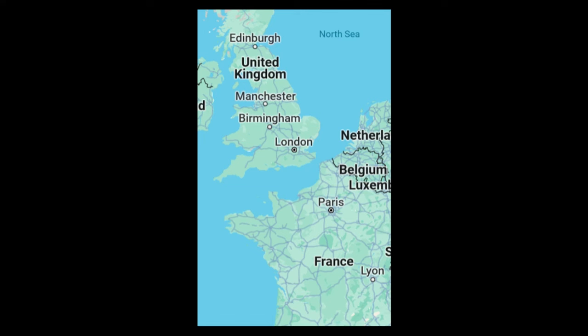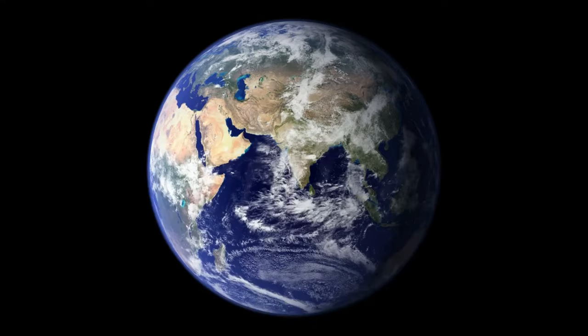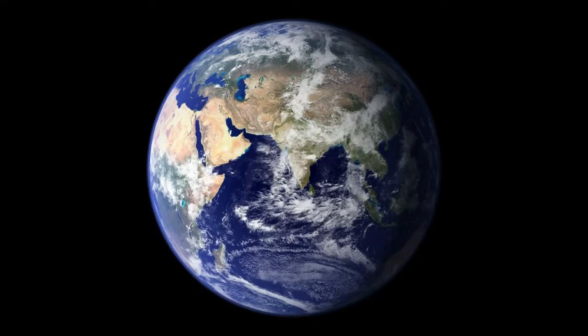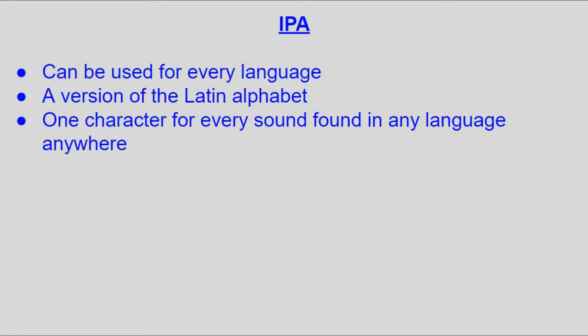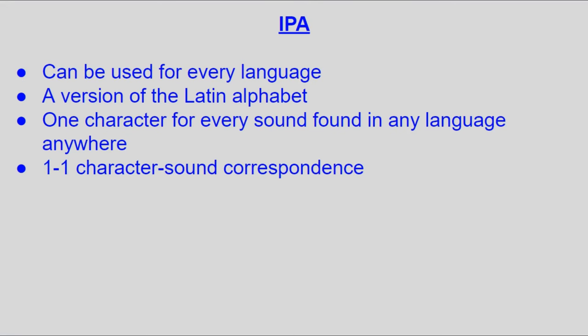The alphabet was originally serviceable only in English and French, but has since expanded to include every language that we know of. Since IPA aims to represent every language equally, it's more or less a version of the Latin alphabet, where there's one character for every sound found in any language, and when IPA is written out, there's a one-to-one character to sound correspondence.